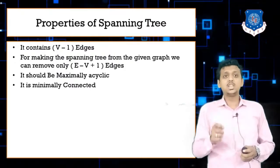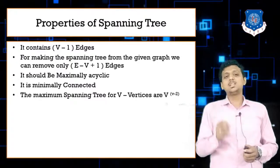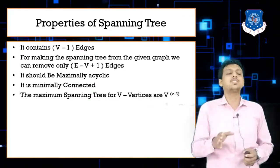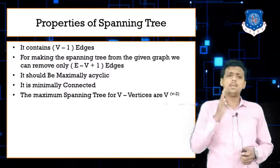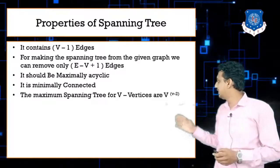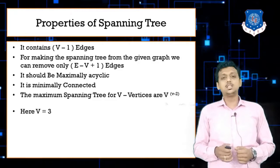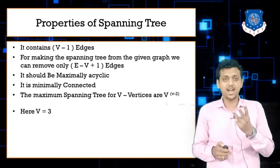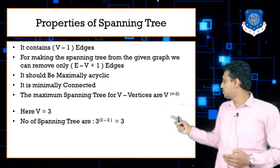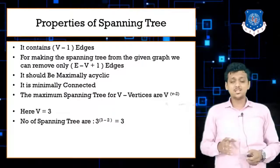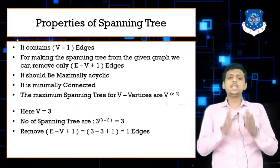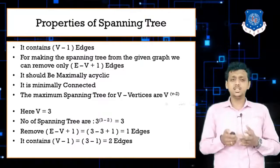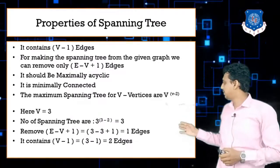The maximum number of spanning trees you can make from a graph is determined by the number of vertices. The maximum number of spanning trees from V vertices is V raised to V minus 2. For example, if V equals 3, then the number of spanning trees is 3 raised to 3 minus 2, which is 3. To make the spanning tree from the graph we need to remove 3 minus 3 plus 1, that means 1 edge, leaving the spanning tree with 2 edges.